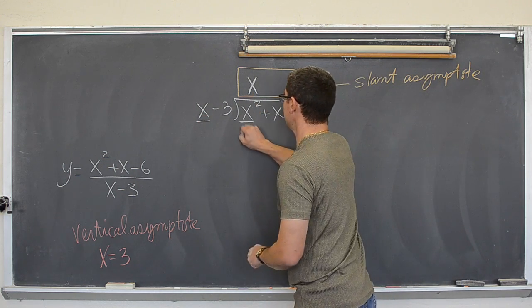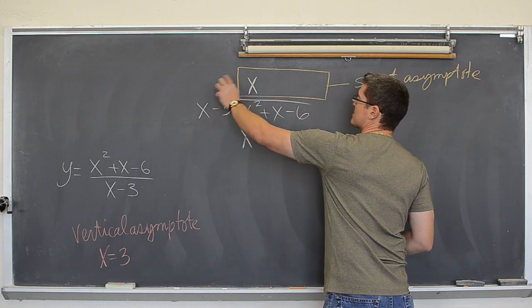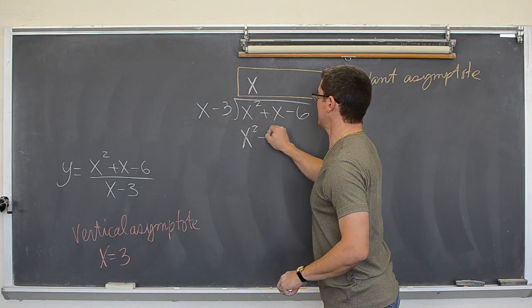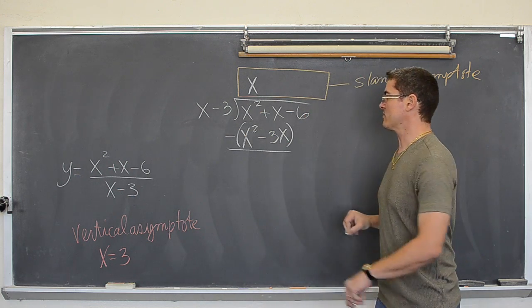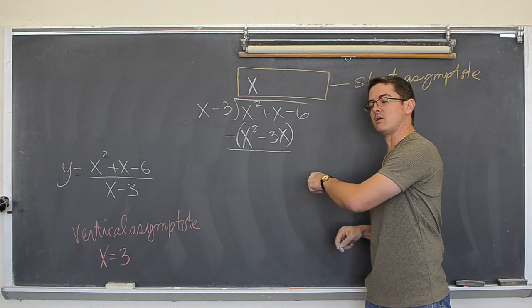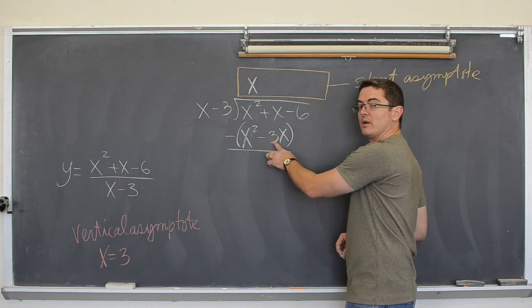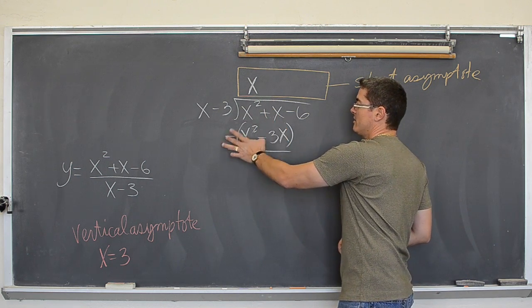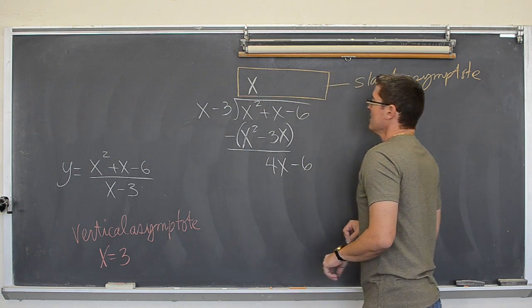x times x is x squared. And x times negative three is negative three x. And then we are going to subtract down as we do this long division. x minus x is zero. And x minus negative three is plus. So 1 plus 3 is equal to 4x.